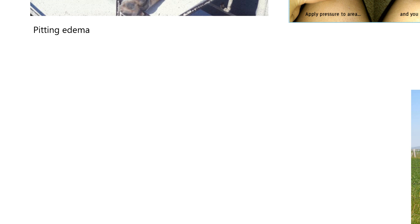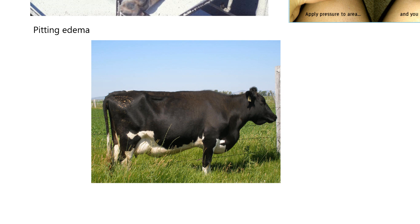Here's a cow with a couple cases of edema. This is the right side of the cow — here's the mammary gland, and you can see this enlarged area here is usually not there, so this would be called udder edema. Then this area here, which is often called the brisket, has brisket edema in this case.